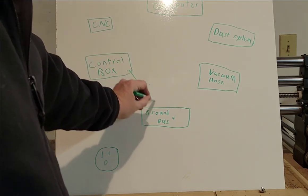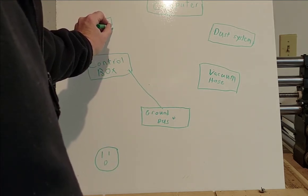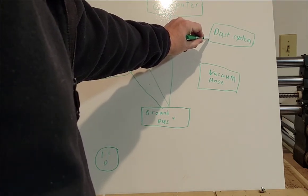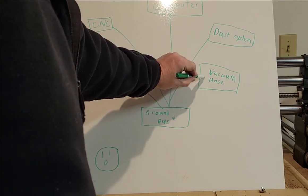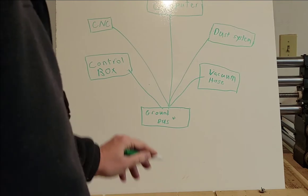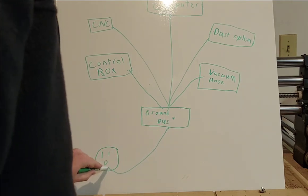And essentially this is what you do: you take the ground from your control box, it comes here. You take the ground from your CNC, it comes here. You take the ground from your computer, it comes here. You take the ground from your dust system, it comes here. You take the ground from your vacuum hose which is a wrap, goes to there. The ground bus goes right there.